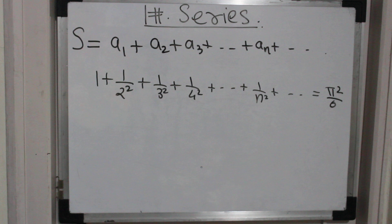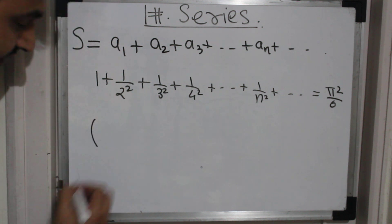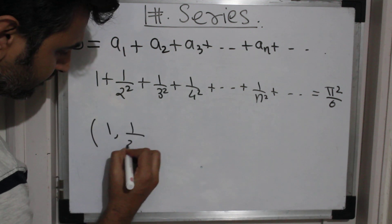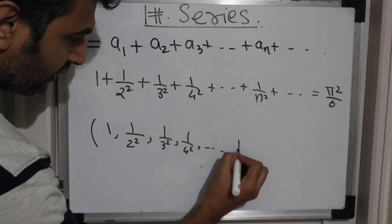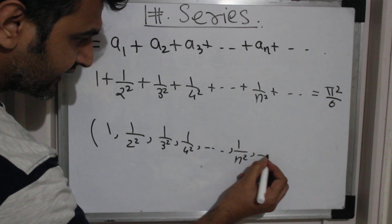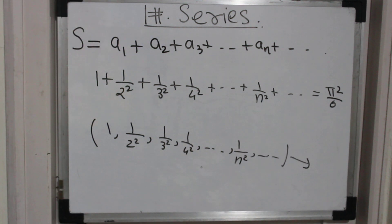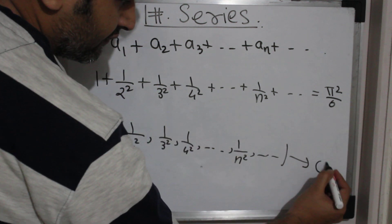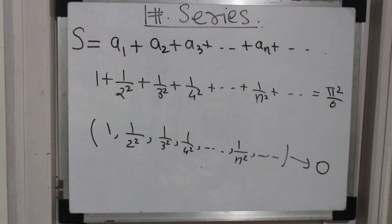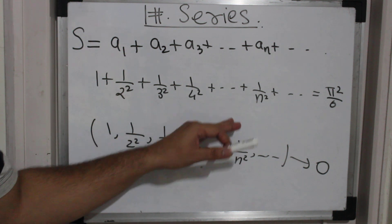Whereas if I ask you what is the limit of a sequence — suppose I take the sequence 1/2², 1/3², 1/4², ... — and ask what is the limit of this sequence, that means as n goes to infinity, where will the sequence approach? One can easily say that since the denominator is going to infinity, 1/∞ is essentially zero. So zero is the limit of that sequence. Finding an infinite sum is a very difficult task compared to finding the limit of a sequence.